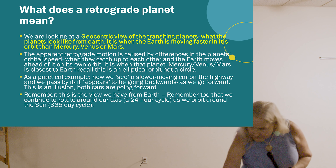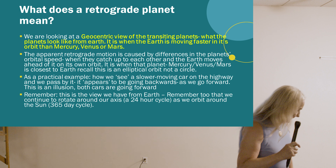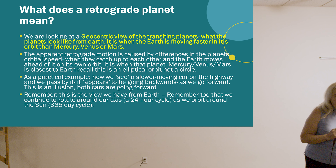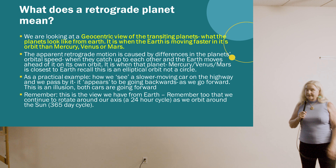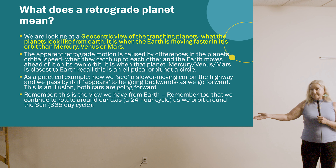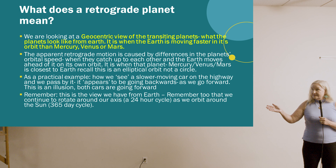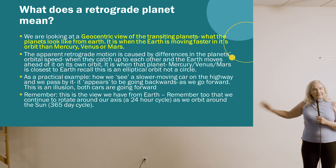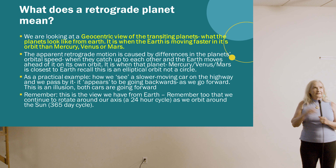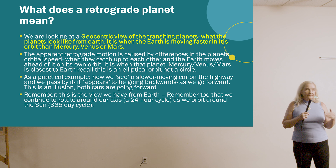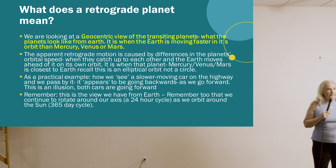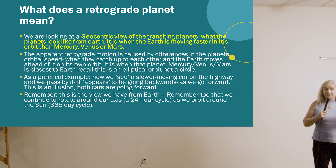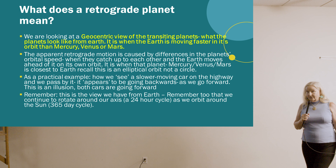We can visualize this with a highway analogy. We're on a freeway going 80 miles an hour, and someone to our right is only going 50 or 60 miles an hour. As we pass them, that car appears to be going backward — but in reality it isn't. We're both going forward, but it appears to move backward. That's the same idea with any of the retrogrades we look at.